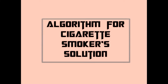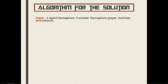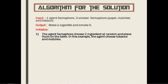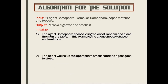Now moving on to the algorithm for the cigarette smokers solution. The input is one agent semaphore and three smoker semaphores: paper, matches, and tobacco. The output is to automatically make a cigarette and smoke it. All smoker semaphores start sleeping, and the agent semaphore chooses two ingredients at random and places them on the table.